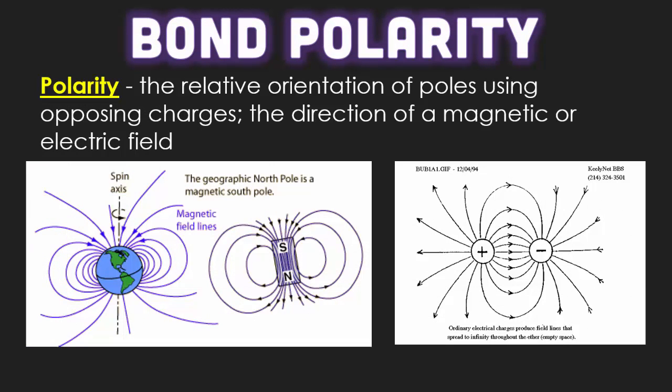Polarity is the relative orientation of poles using opposing charges, the direction of a magnetic or electric field. It's like a positive and a negative being attracted to one another. Our planet, for example, has a north and south pole, which is ironically also a positive and negative charge. The northern part of a magnet is going to be positively charged, while the southern part will be negatively charged. So when we talk about polarity, we're talking about electrostatic attractions.